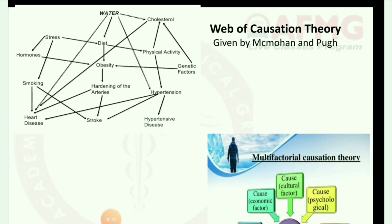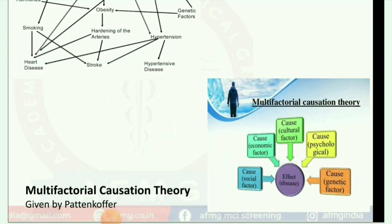Next image is the web of causation theory, given by McMohan and Poogh. Next image is multifactorial causation theory, given by Patton Koffer. It includes economic, cultural, psychological, genetic, and social factors — all of which affect one disease.